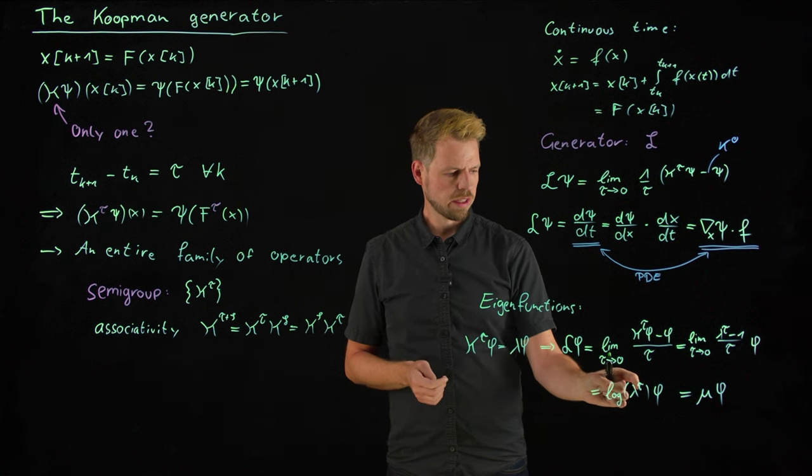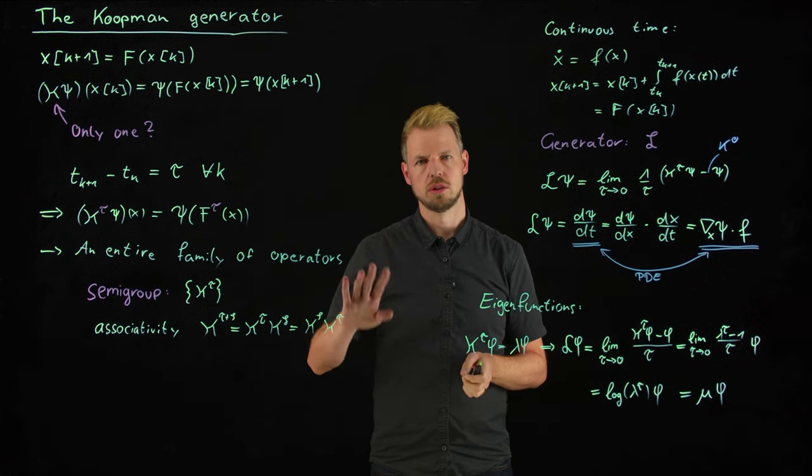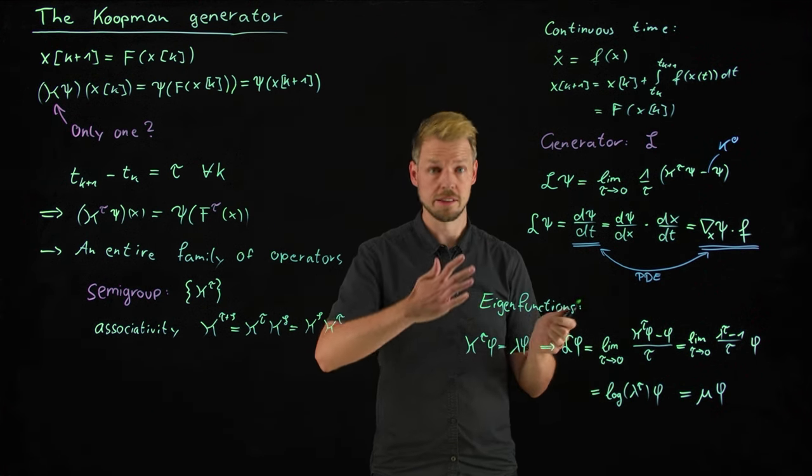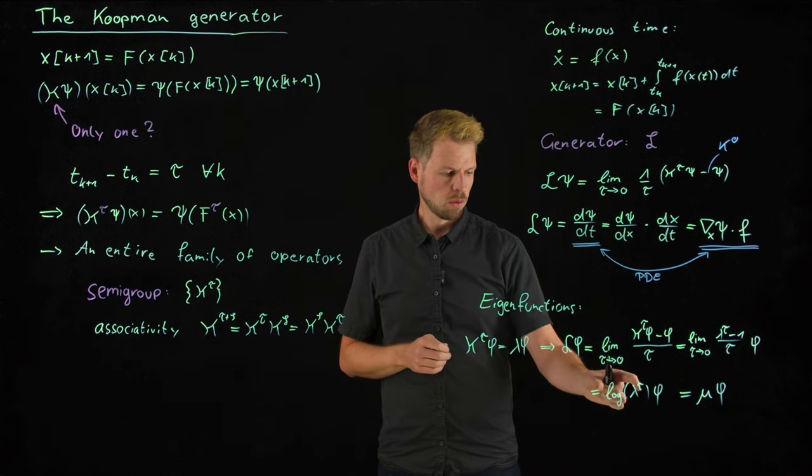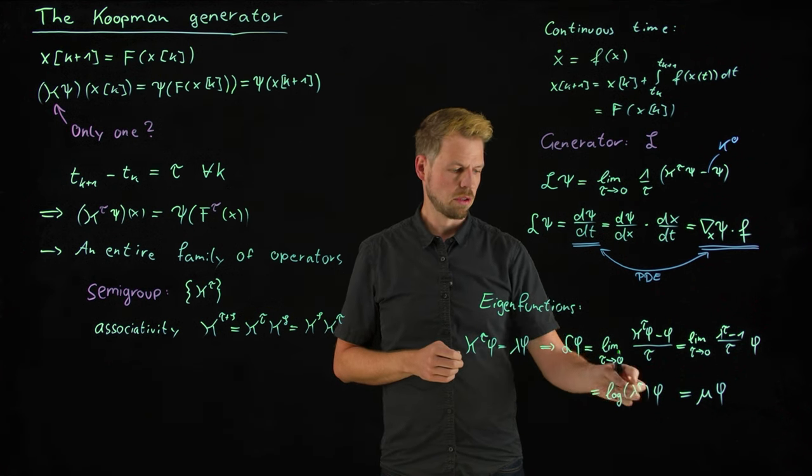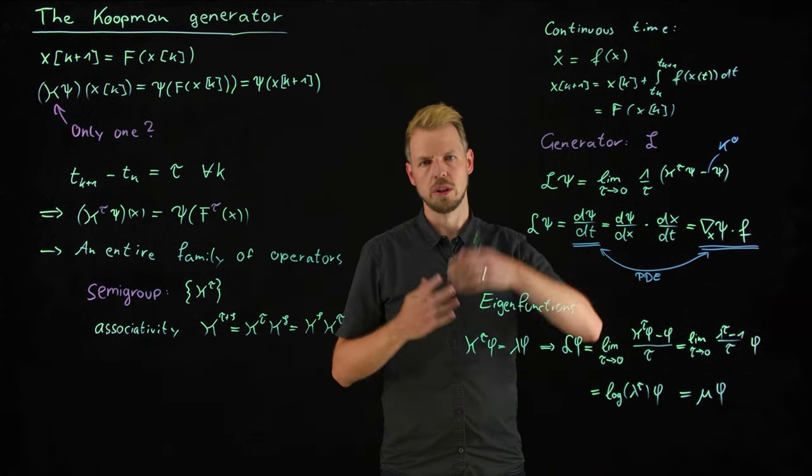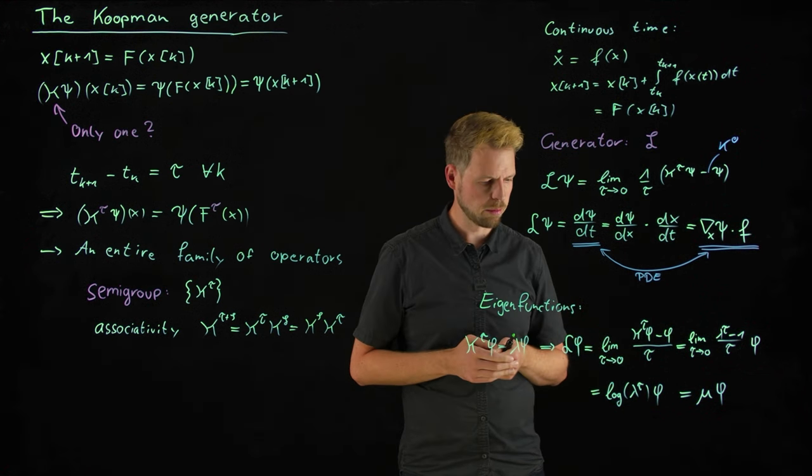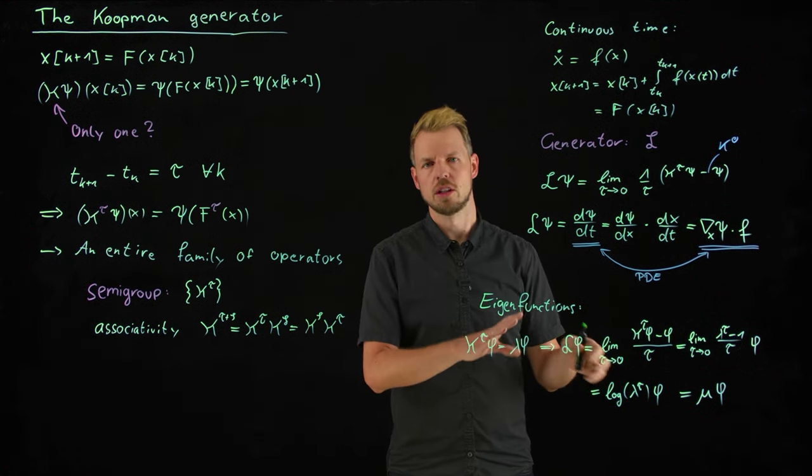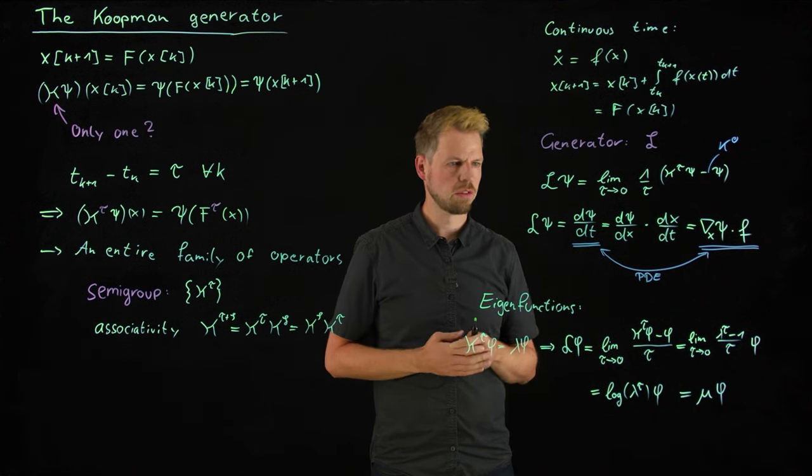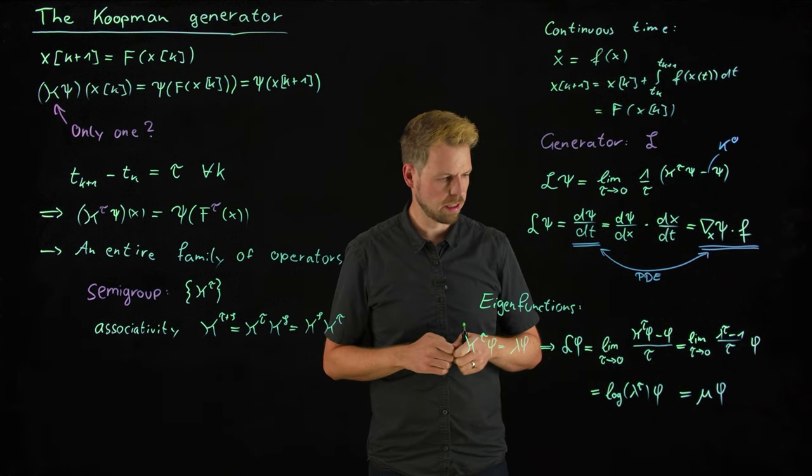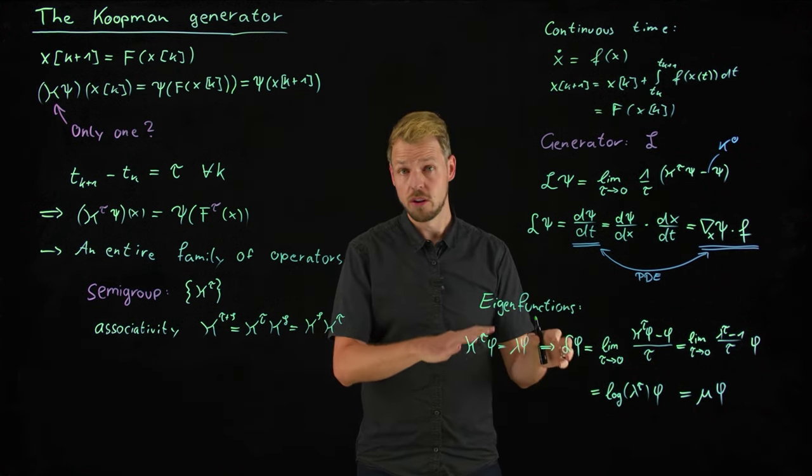And so this is also quite natural. We have seen this for continuous time and discrete time linear systems in other videos, where we can relate, going the other way, by exponentiating the continuous time eigenvalue we get eigenvalues for the discrete time system. So very natural extension of classical techniques in linear systems. And this is very useful.